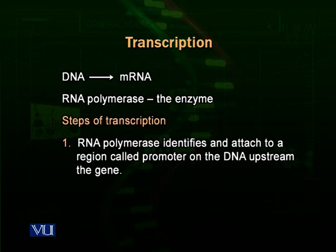The RNA polymerase identifies a specific region on the DNA that is present before the actual structural gene. We call that region a promoter region. RNA polymerase comes and binds to the promoter region. It is a very large enzyme and it attaches to the promoter region, covering it and also covering some initial part of the structural gene.